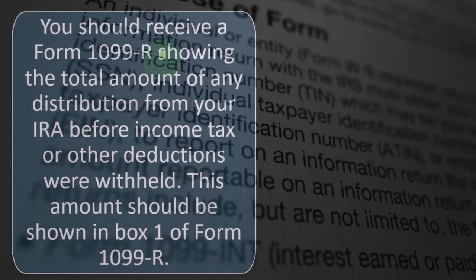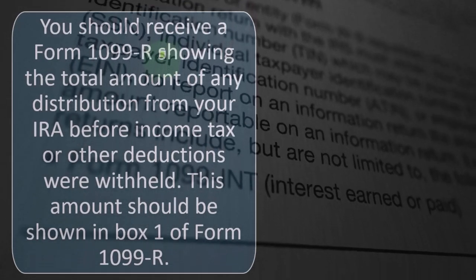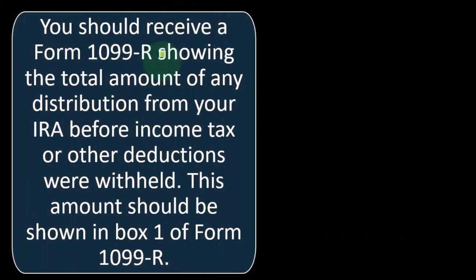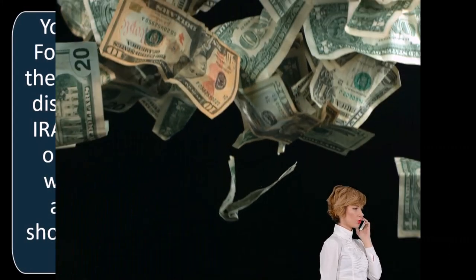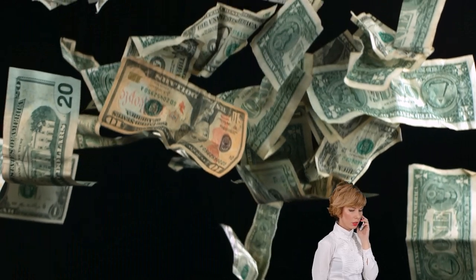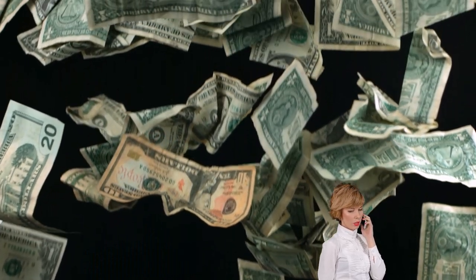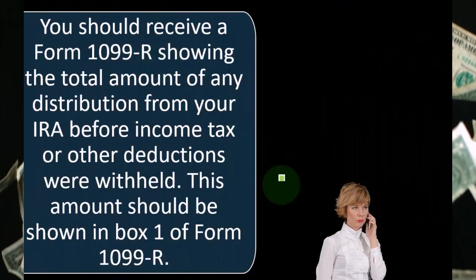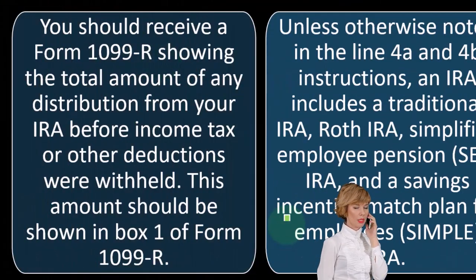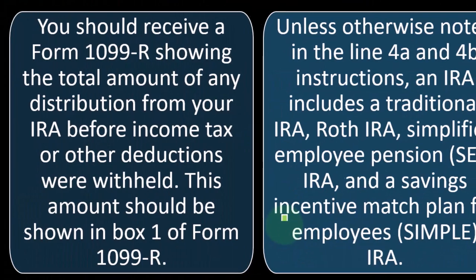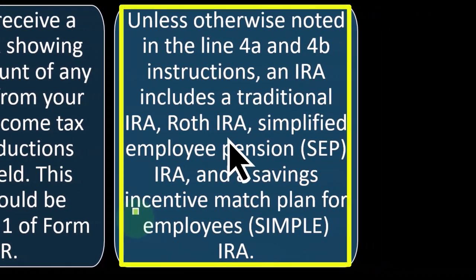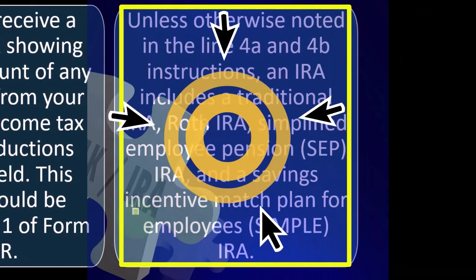However, you might also get a 1099-R when someone's still in their working years. That's concerning because it might mean they pulled the money out early, not only triggering a taxable event, but possibly substantial penalties. So that's something to be careful about.